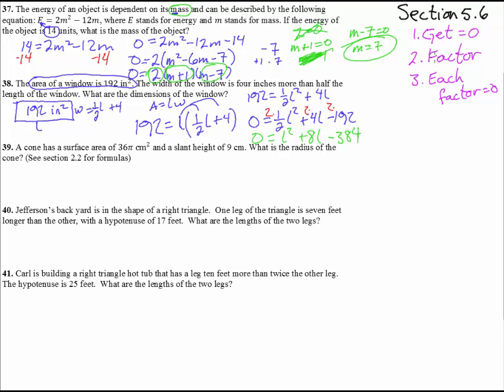Alright. We have now gotten it equal to 0. I still don't like that fraction there. If we're going to try to factor something, I'm going to get rid of that fraction. So let's times everything by 2. And we get 0 equals L squared plus 8 L minus 384. So we have to factor this guy.